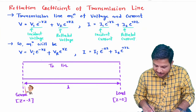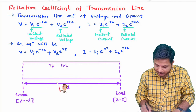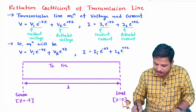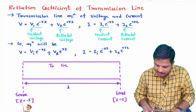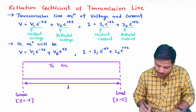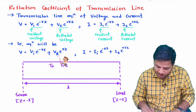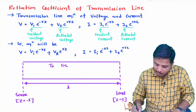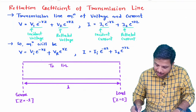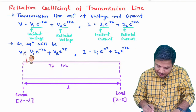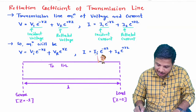Moving from the load toward the source, z = −l. The reference is at the load, so in that direction the length will be z = −l. If we place z = 0 in the two equations, we get load voltage and load current. If we place z = −l, the two equations represent source voltage and source current.